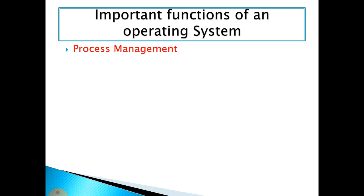We can discuss the different states of a process. When we create a process, it is in the 'new' state — like when you write a C program and save it, it is stored on the hard drive in the new state. When we compile that program and there are no errors, it moves to the 'ready' state and is stored in RAM, ready for execution but waiting for the CPU.